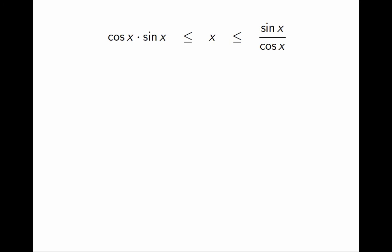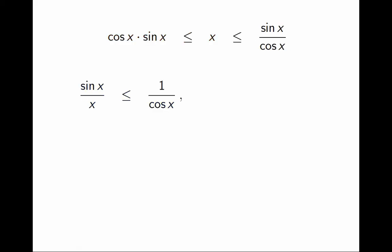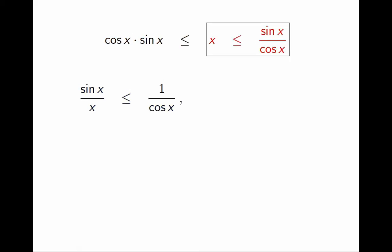Let's not lose track of the objective. I am trying to conclude something about sin(x) over x. Look at the first inequality. From it, I can conclude that sin(x) over x is less than or equal to 1 over cos(x). Now look at the second inequality. From it, I can conclude that sin(x) over x is greater than or equal to cos(x).